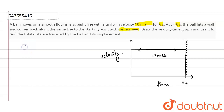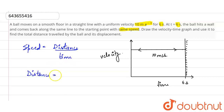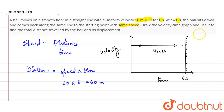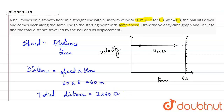Now, as we know, distance equals speed multiplied by time. So distance is 10 multiplied by 6, which equals 60 meters — but that is just for the forward motion. As the ball hits the wall and comes back to the starting point, the total distance is 2 multiplied by 60, which equals 120 meters.